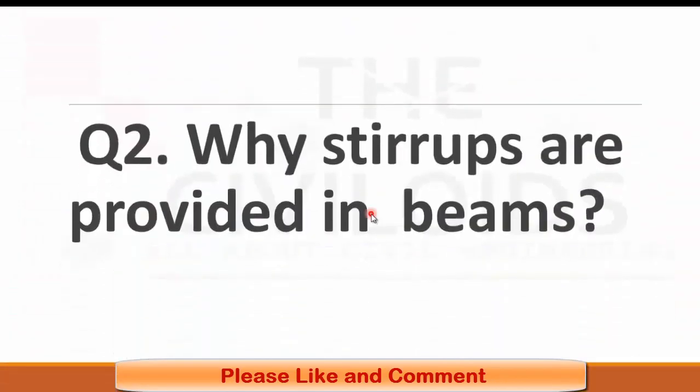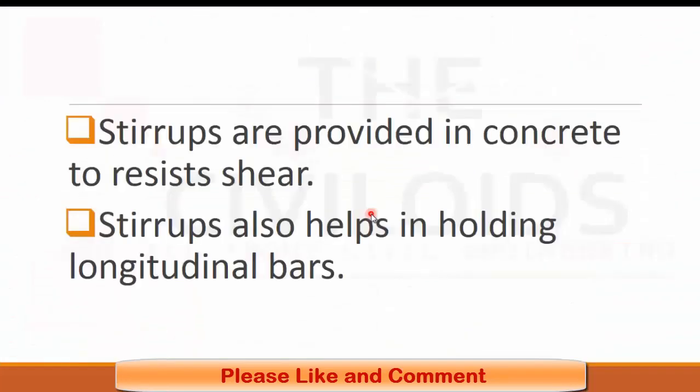Question number two: Why stirrups are provided in beams? Stirrups are provided in beams in the form of rings. The main function of stirrups is to resist shear force. Stirrups also help in holding longitudinal steel bars.